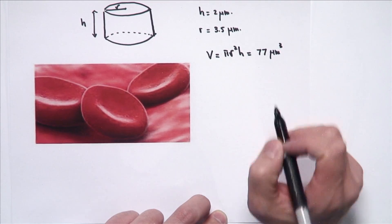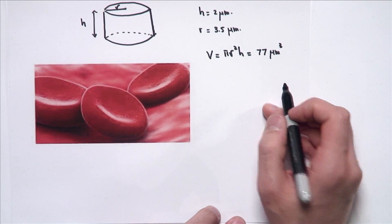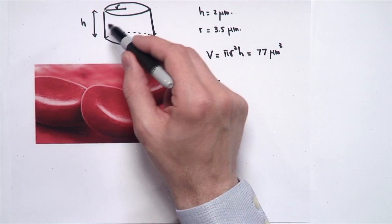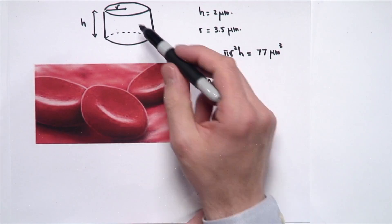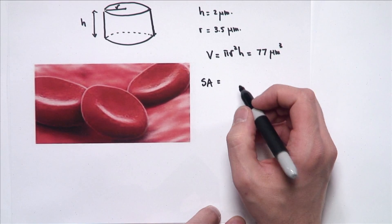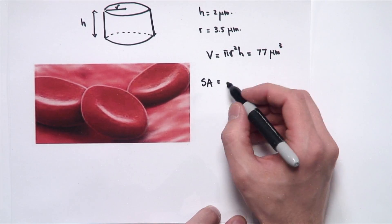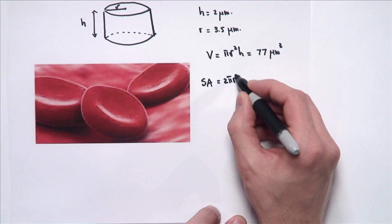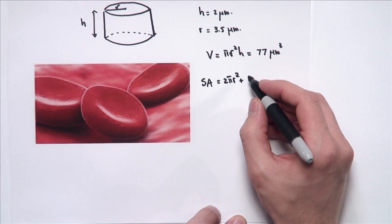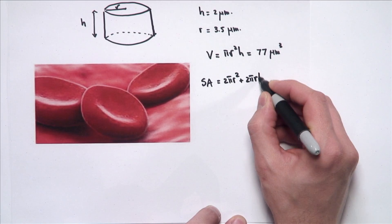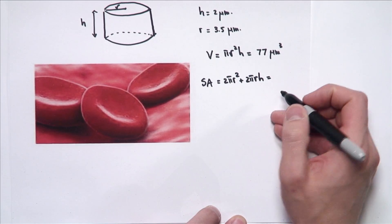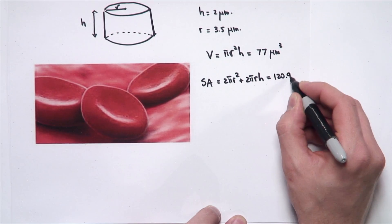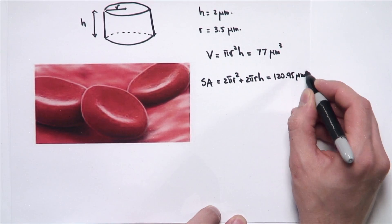We'll come back to discussing the units in a little bit. Now the surface area is just going to be the area surrounding the cylinder plus the two circles on top and the bottom. So the two circles are 2 pi r squared, plus the surrounding area is 2 pi r h. That comes out to be about 120.95 square microns.